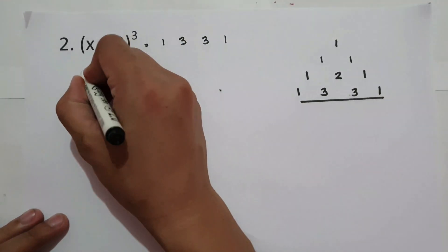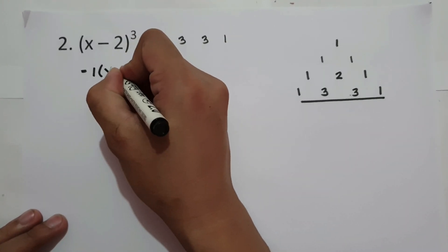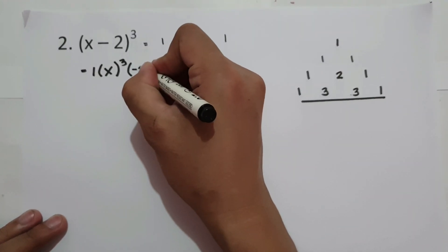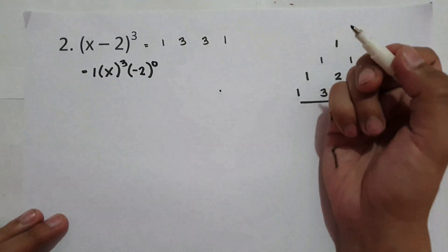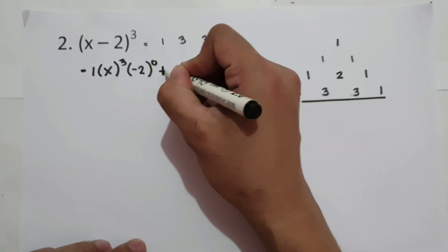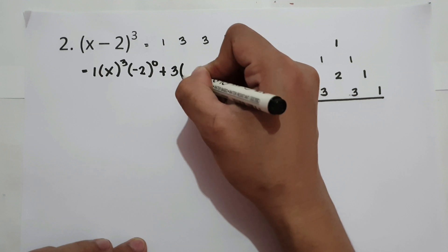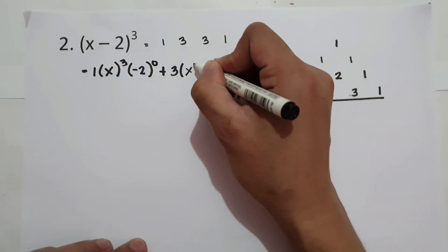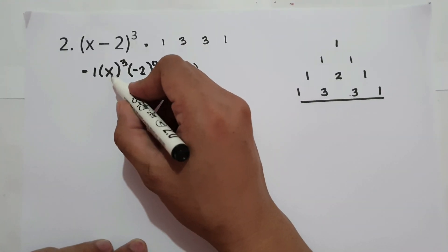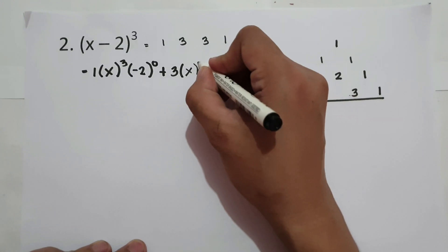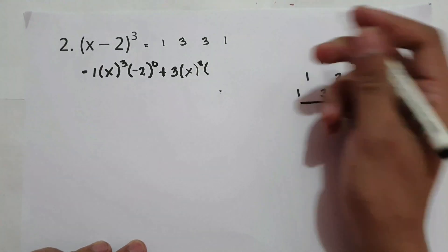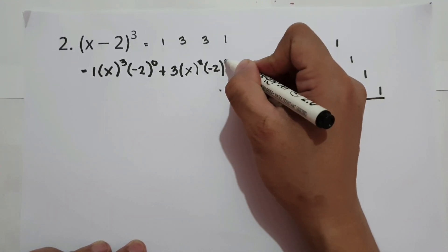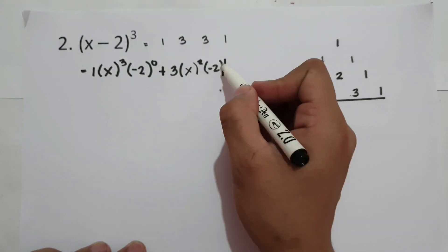So let us write the first coefficient, which is 1, times x raised to 3, and the second term negative 2 raised to the lowest exponent, 0. Then the second term has coefficient 3, times x — and if x was raised by 3, this time x is raised by 2 — then negative 2 is being raised from 1, that is from 0 up to 1.